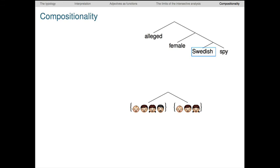Let's close by seeing how all these pieces fit together. Here's a basic syntactic structure for the phrase alleged female Swedish spy. This has three adjectives stacked up. Interpreting it is no problem given the assumptions we've made. If we start with the meaning of spy as the set here, and we modify it with the intersective adjective Swedish, then the meaning of that first node is just the set of things that are both Swedish and spies.